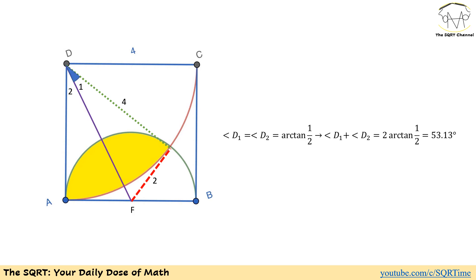Now let's add a new line — the one in purple. The purple line is making two angles here: D1 and D2. D1 and D2 are equal. The reason is AD and the green line are equal — they are both the radius of the quarter circle. We can also say that AF and the red line are equal because they are both the radius of the semicircle. As a result, D1 and D2 are equal.